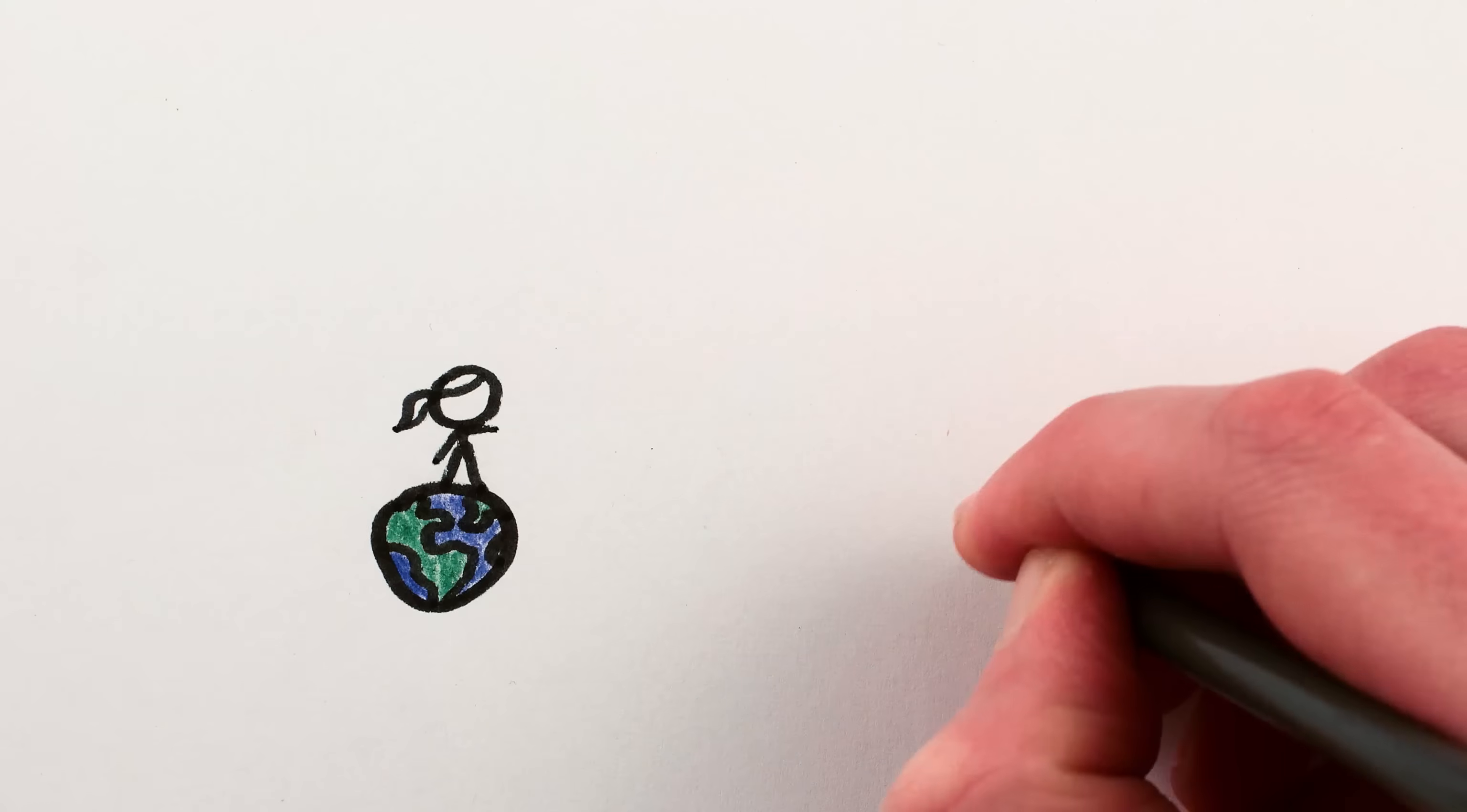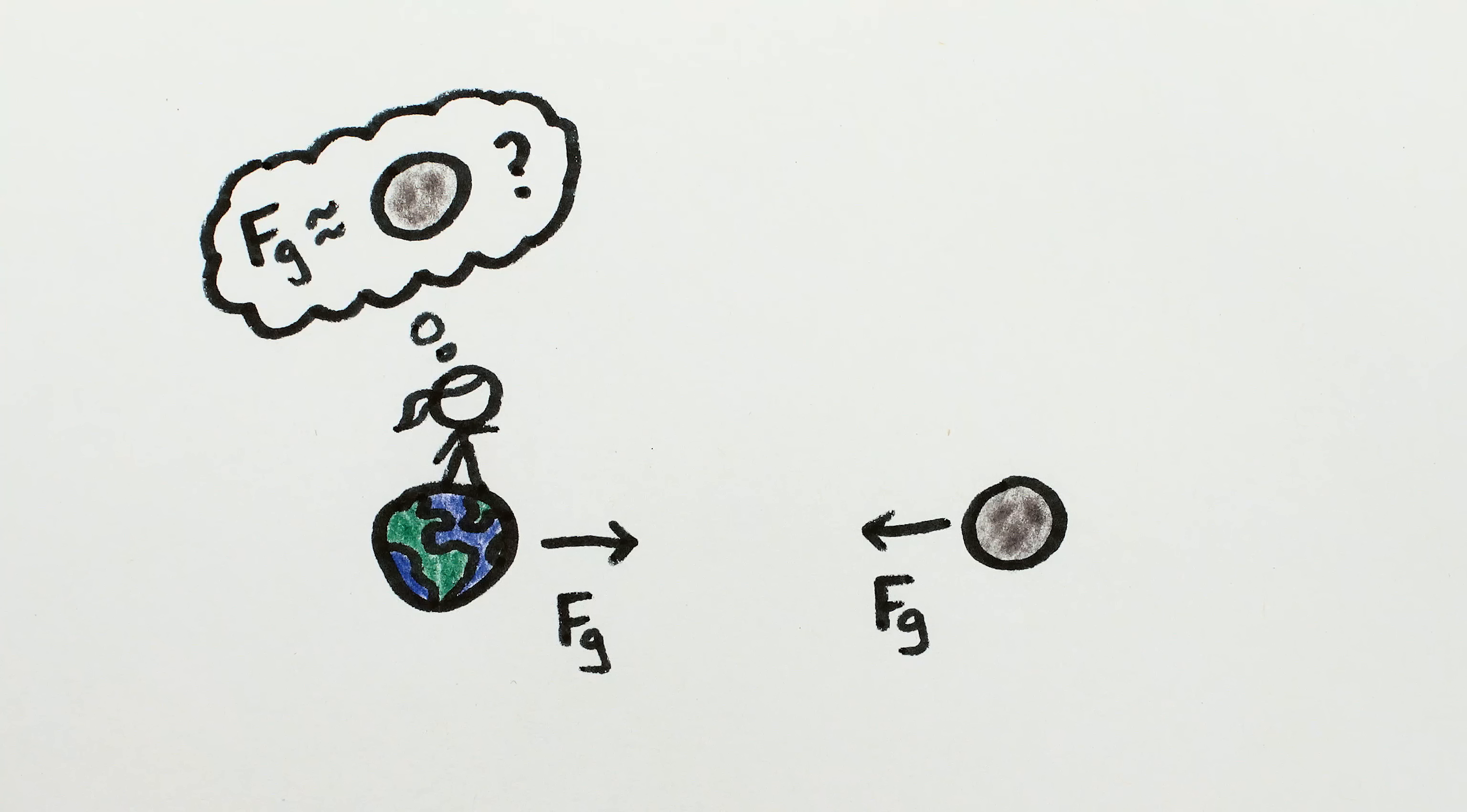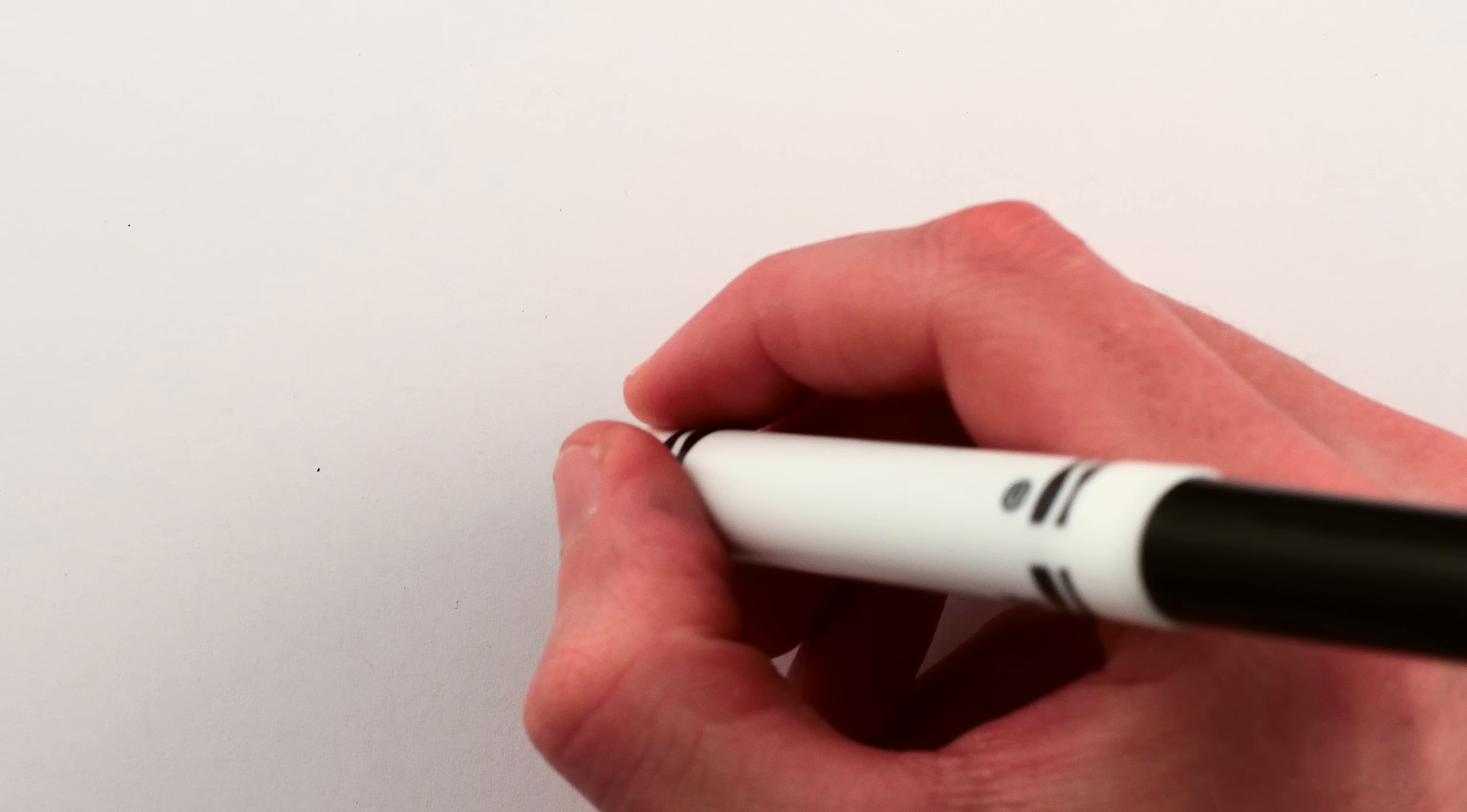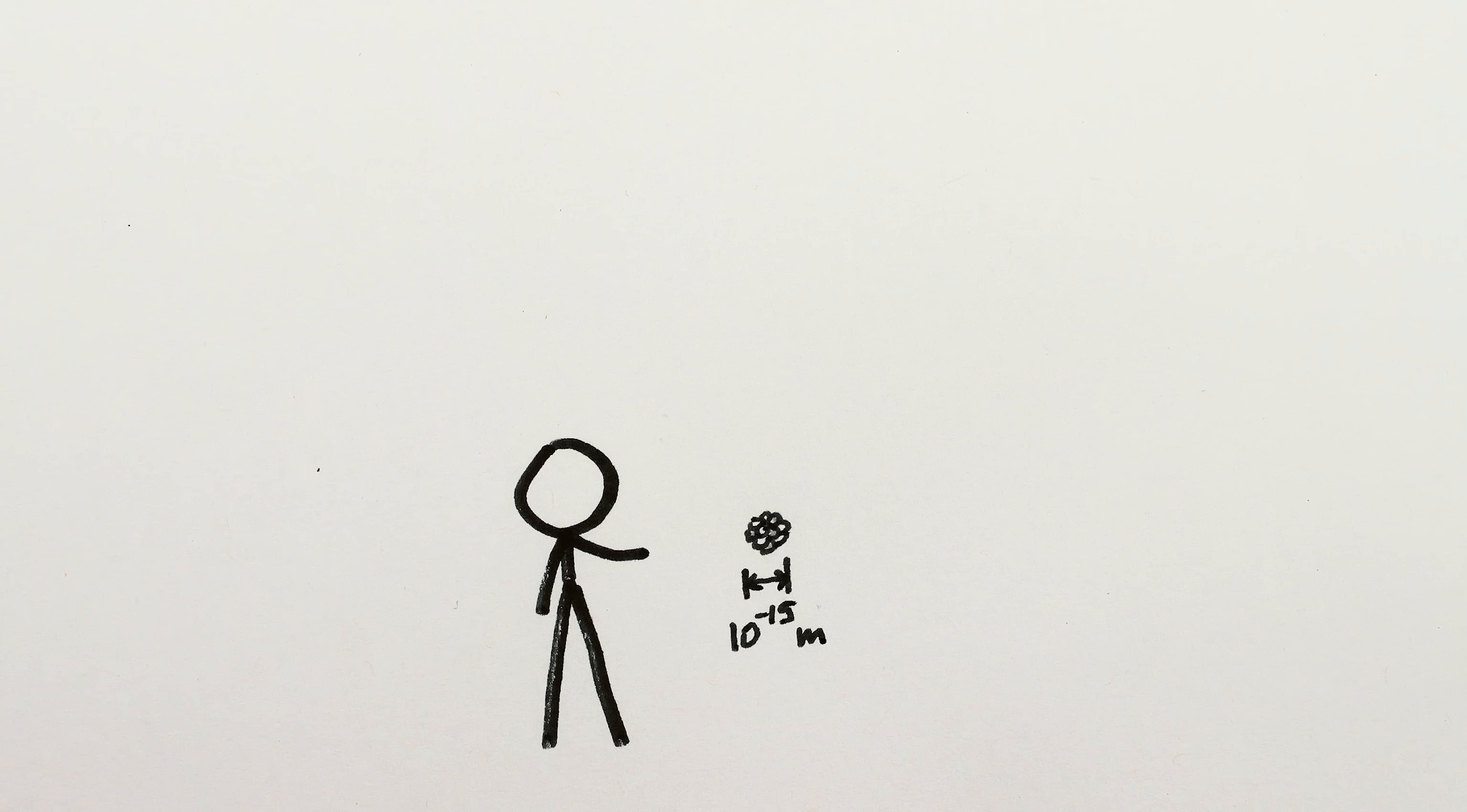It would be like not knowing whether the Moon pulls on us with the force of a hundred billion billion tons of rock or the force of a fruit fly. Or put another way, at the scale of an atomic nucleus, the Law of Gravitation could depend instead on the square of the masses, or the square root, or the inverse cube of the distance.